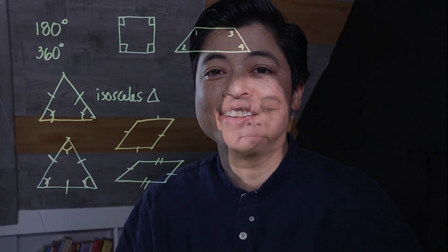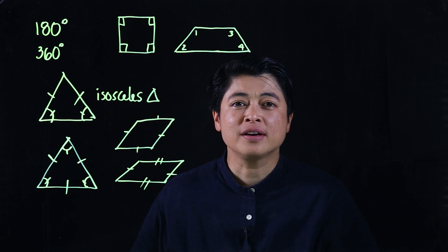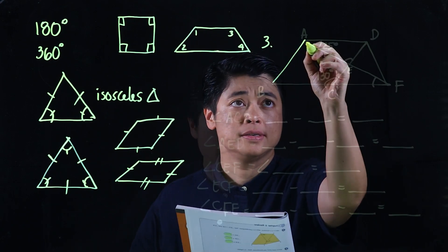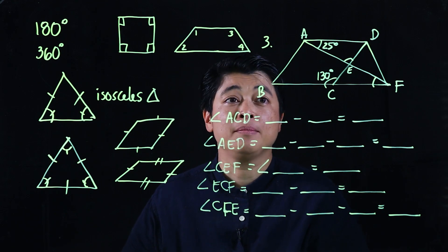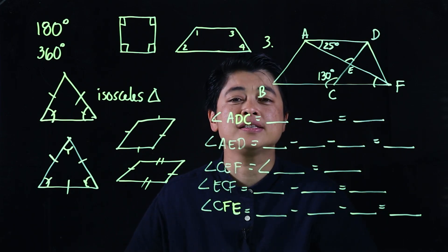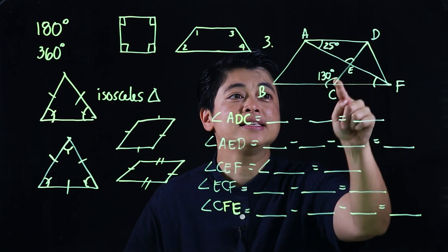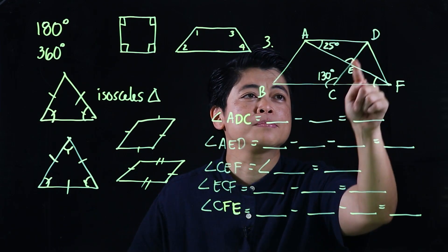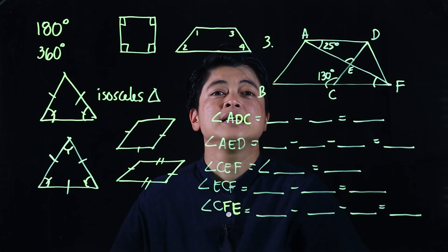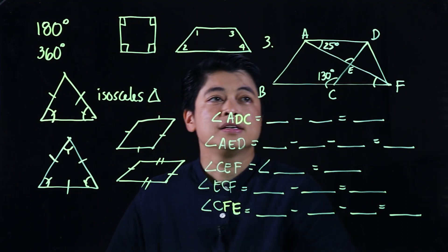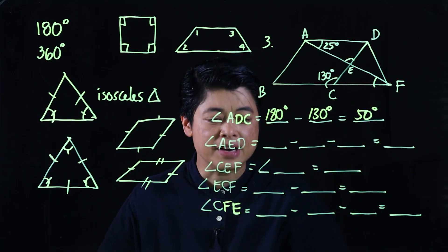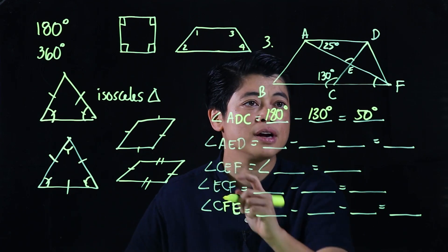Continuing to page 170, problem number three. Looking at the drawing and answering the questions, angle ADC can be found using the parallelogram. Consecutive angles in a parallelogram are supplementary, so that's 180 degrees minus 130 degrees, which equals 50 degrees.